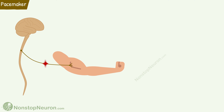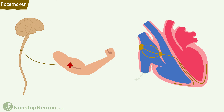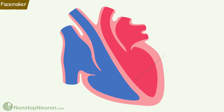The skeletal muscle contracts only when it receives a signal from the central nervous system to contract. But the heart does not wait for a signal from the nervous system. It generates its own impulse to trigger a heartbeat. For this, the heart has pacemaker tissues.